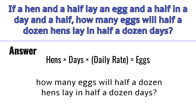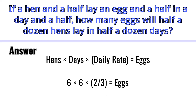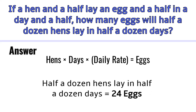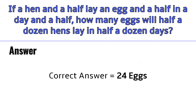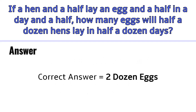So how many eggs will half a dozen hens lay in half a dozen days? Putting it into the equation: 6 hens × 6 days × 2/3 daily rate equals the number of eggs. Solving that gives 24 eggs. So the correct answer to this puzzle is 24 eggs, which is equal to 2 dozen eggs.